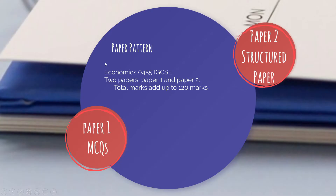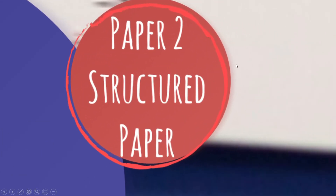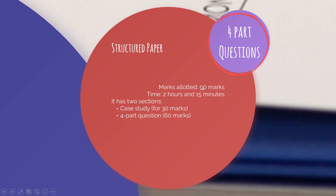Paper 2 is the structured paper. Marks allotted are 90 marks and the time given is 2 hours and 15 minutes. It has two sections: a case study for 30 marks and four-part questions for 60 marks.